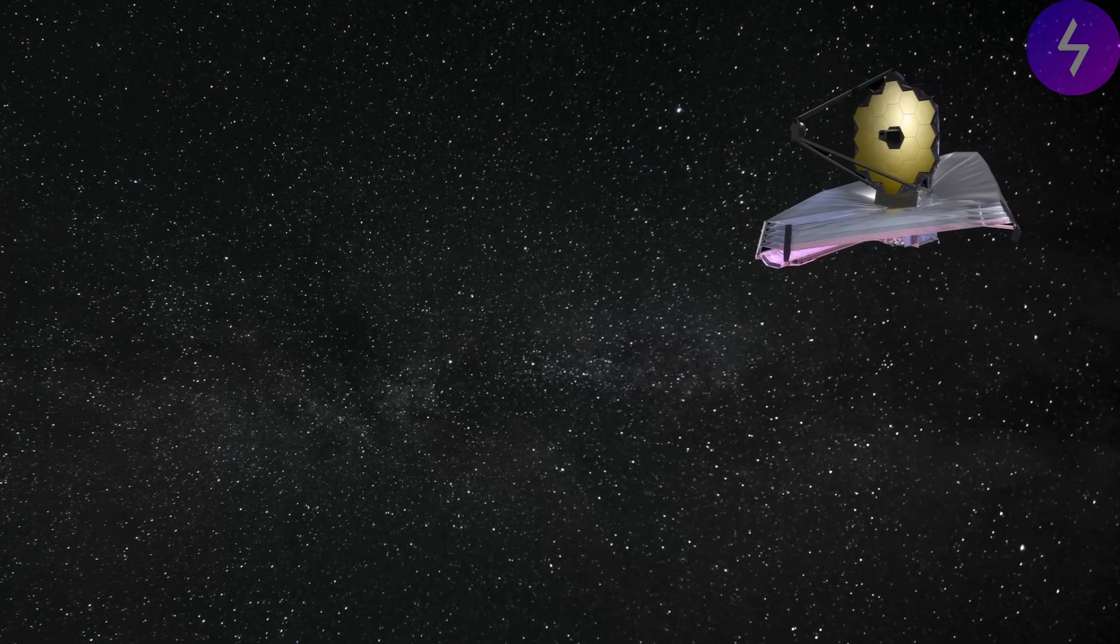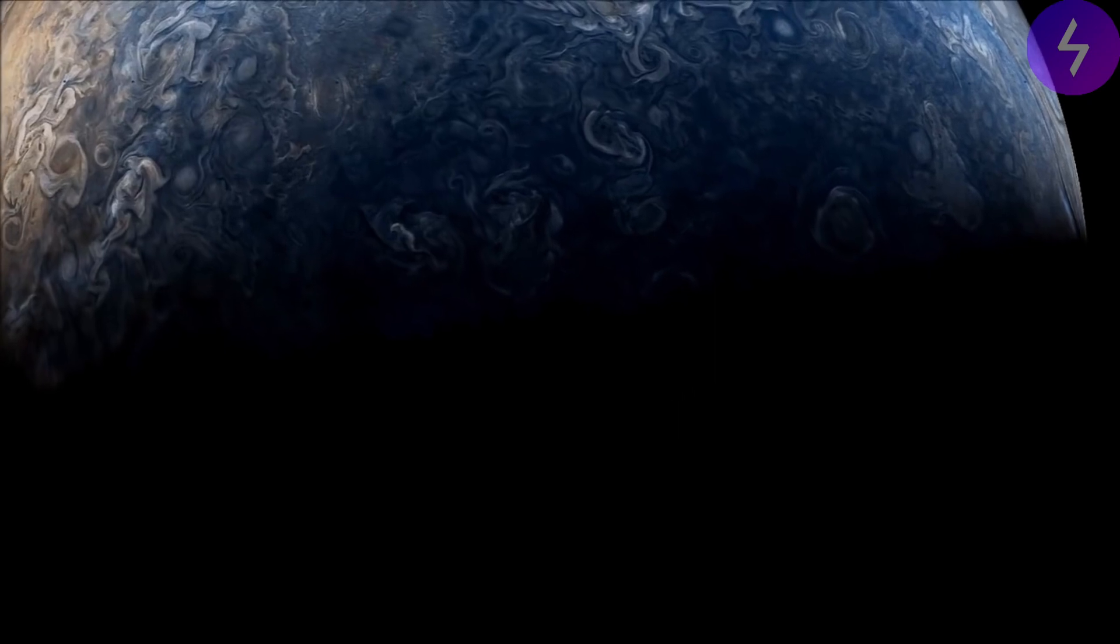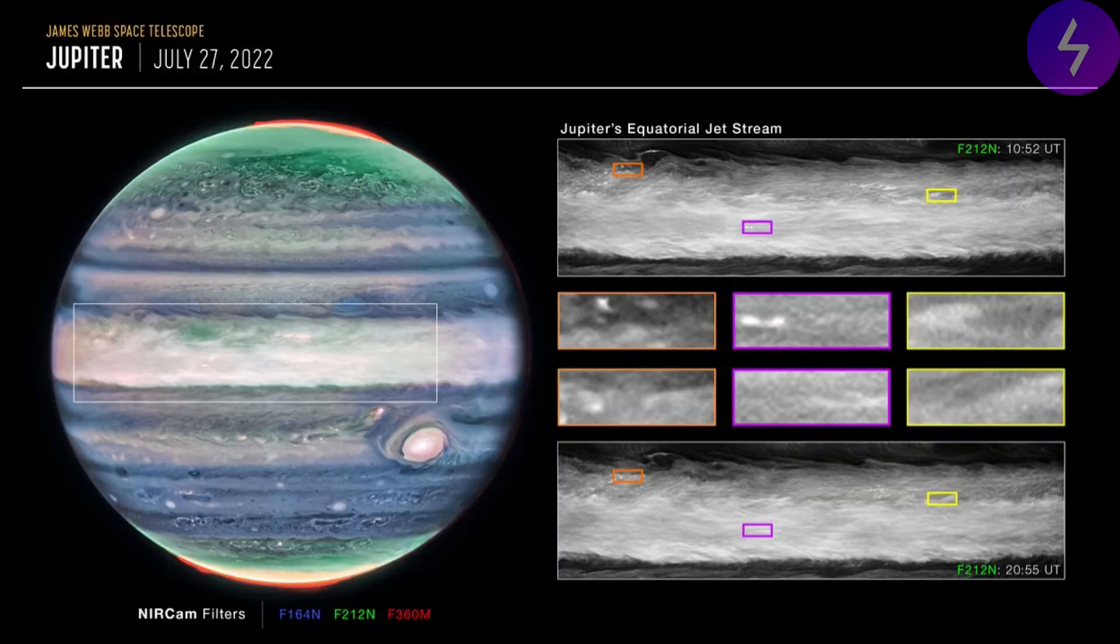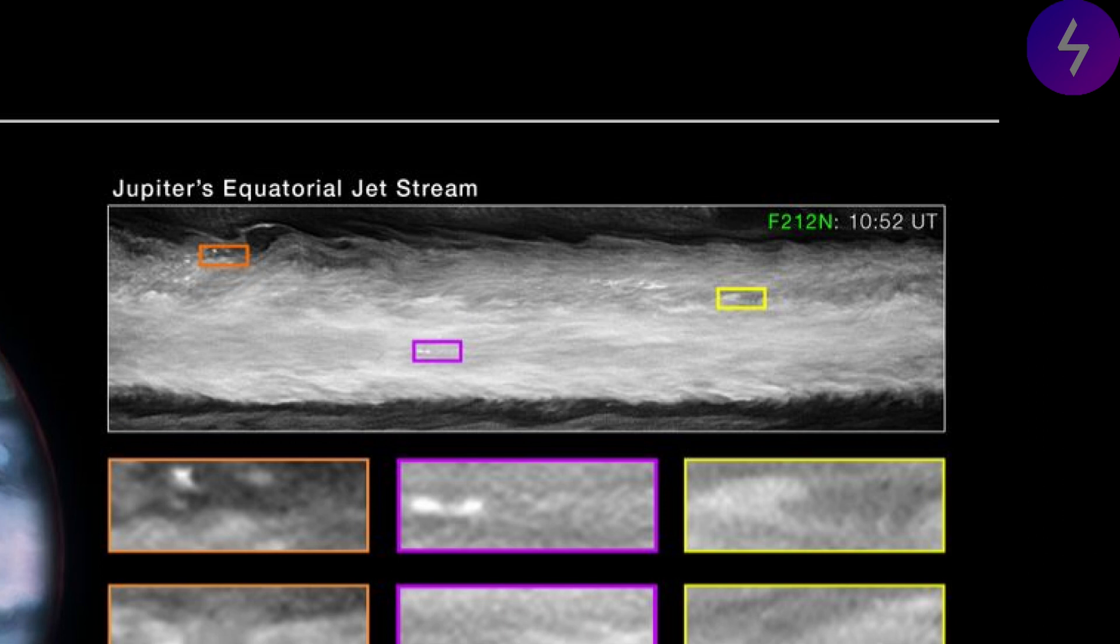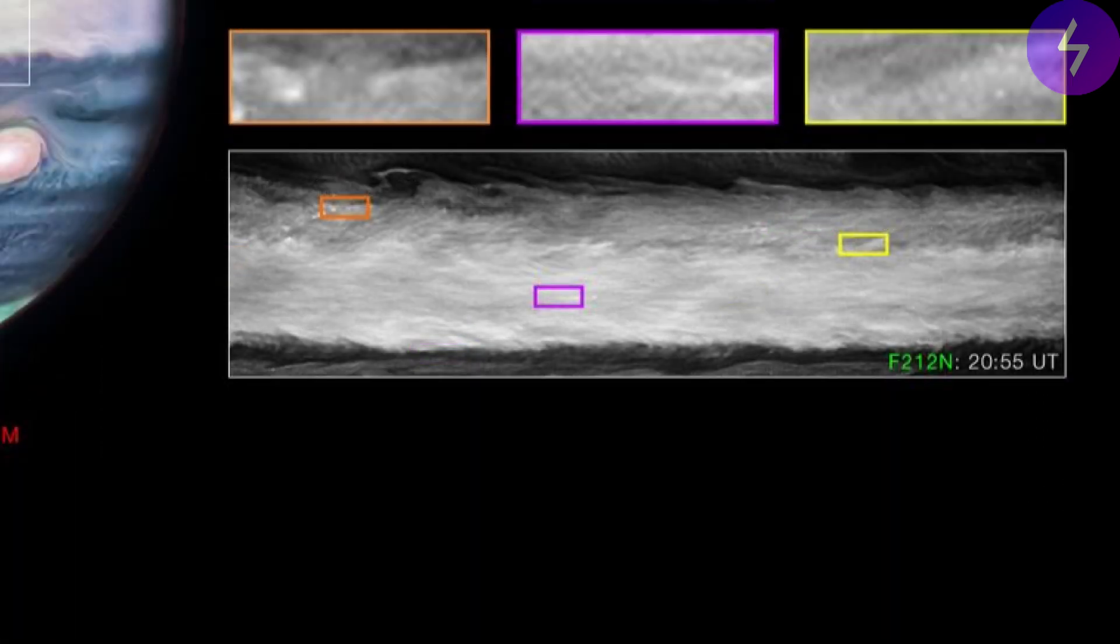The James Webb Space Telescope, designed primarily for observing the early universe, has delivered awe-inspiring insights into our own solar system. In October, the telescope unveiled a previously unseen high-speed jet stream on Jupiter spanning over 3,000 miles and hurtling at approximately 320 miles per hour. In June, the JWST made a groundbreaking discovery by detecting carbon dioxide in the salty liquid oceans of Jupiter's moon Europa.